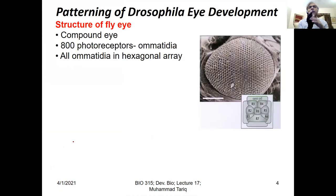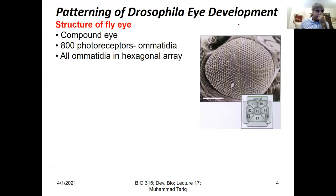Today we are going to talk about the patterning of eye development in flies. It's a compound eye, so you have photoreceptors, and each photoreceptor unit is called an ommatidium. These ommatidia are organized as a hexagonal array. There are 800 such ommatidia in the compound eye, and each ommatidium basically acts as an individual eye.